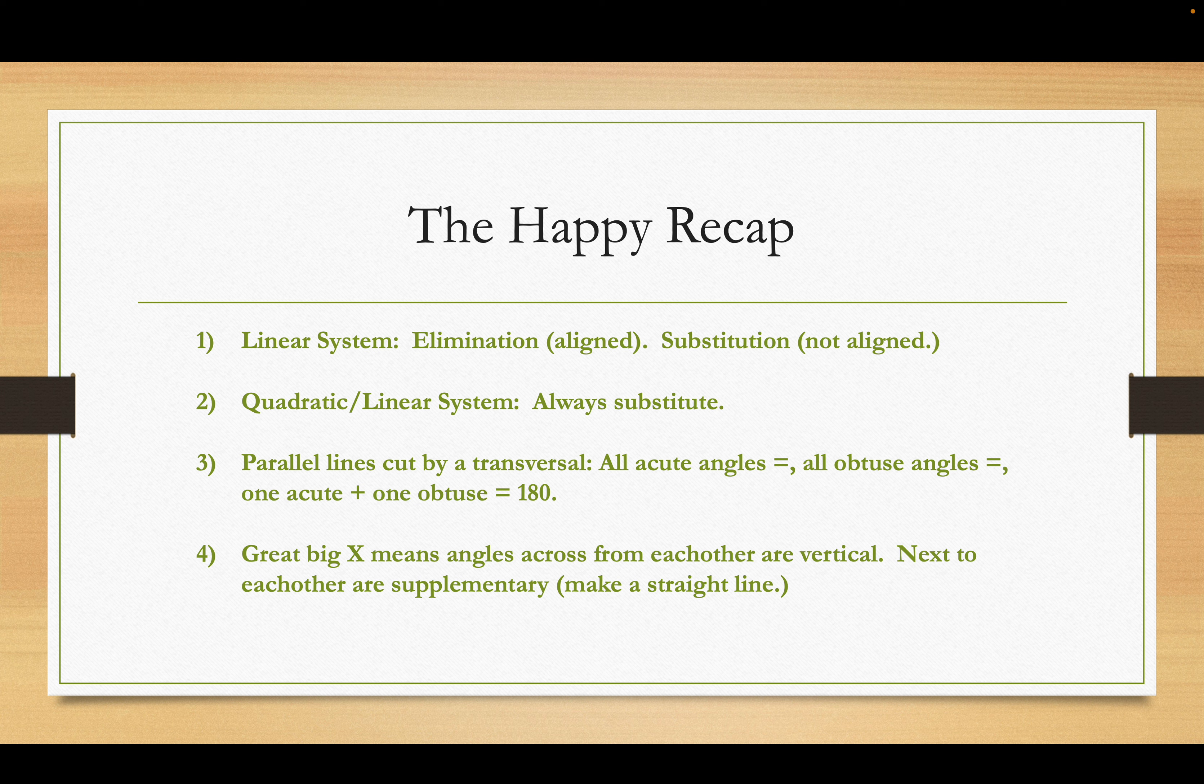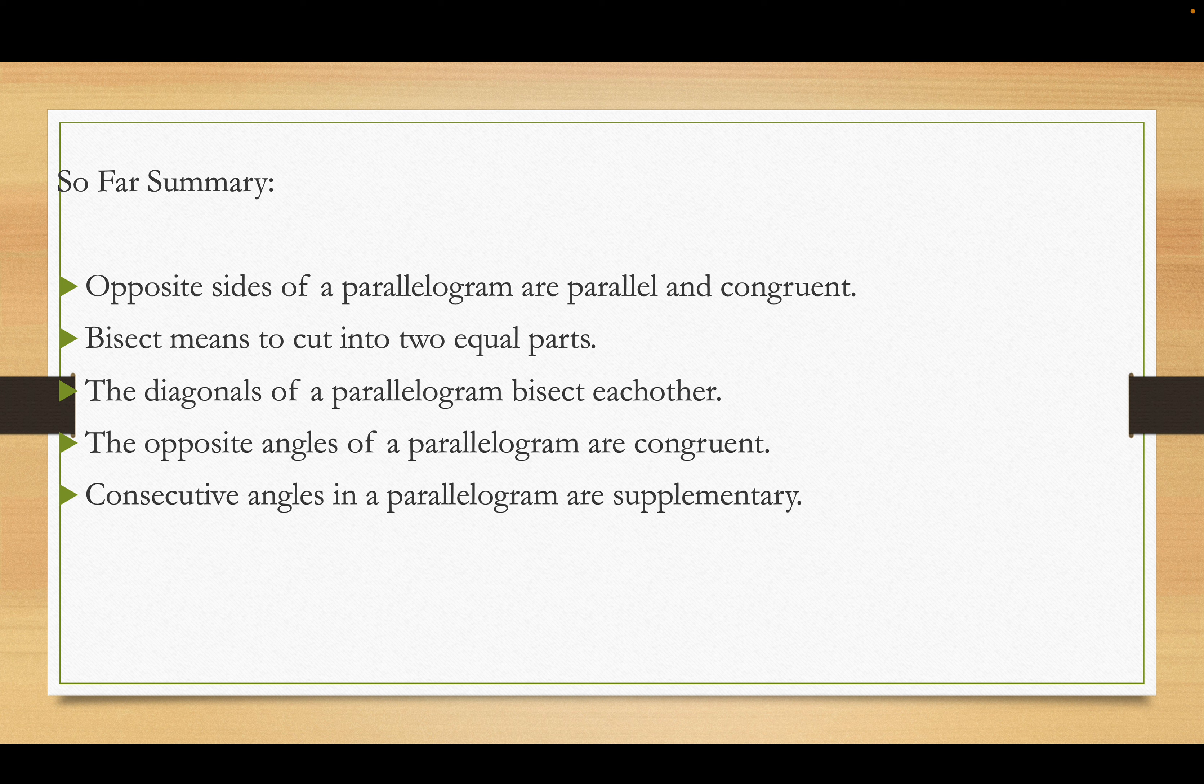So, we're applying that principle to our study of parallelograms. So, we don't go crazy memorizing new rules. And number four, great big X, means the angles across from each other are vertical. So, they're equal. And the next to each other are supplementary. They make a straight line. As far as the parallelogram goes, the opposite sides of a parallelogram are parallel and congruent. Bisect means to cut into two equal parts. The diagonals of a parallelogram bisect each other. Opposite angles of a parallelogram are congruent. Consecutive angles of a parallelogram are supplementary.